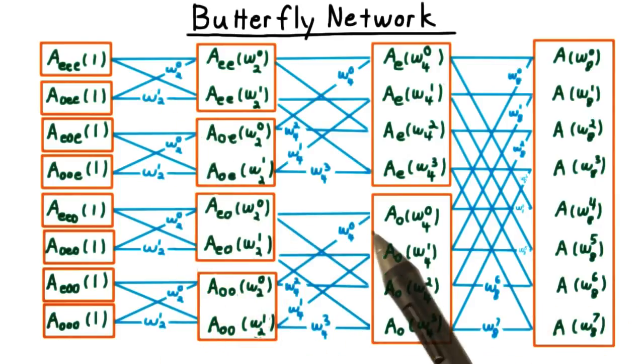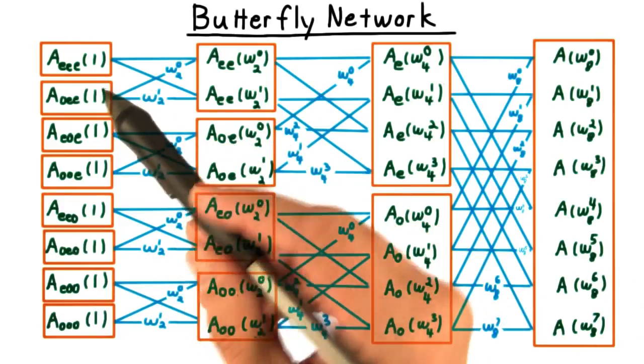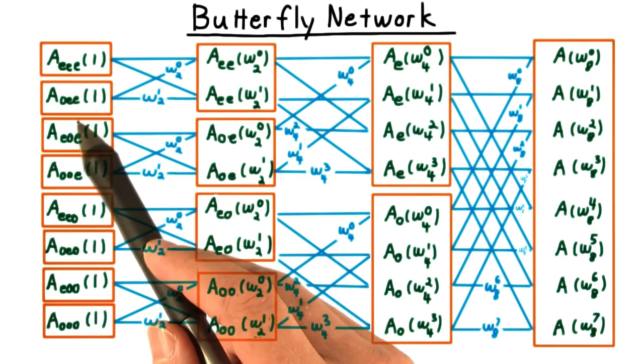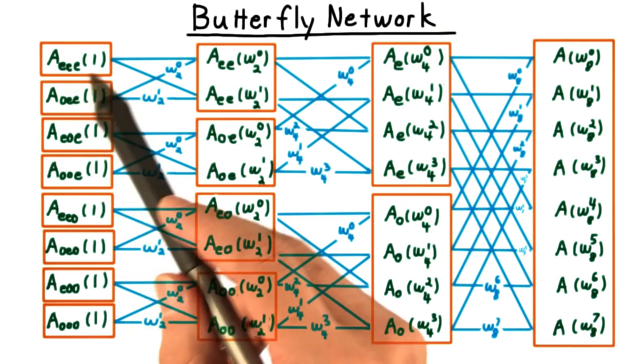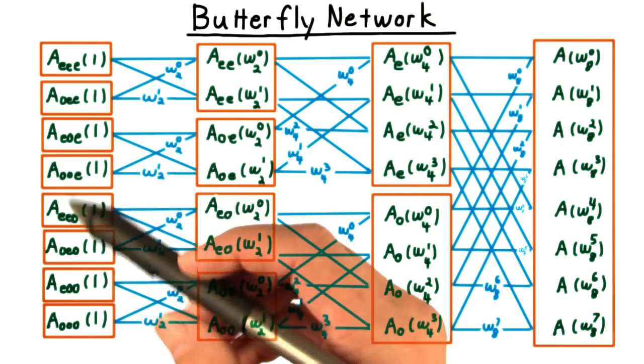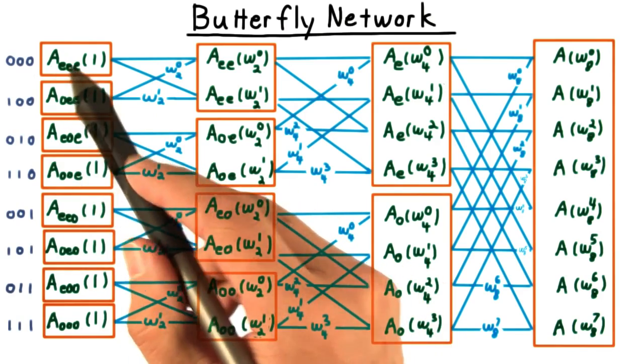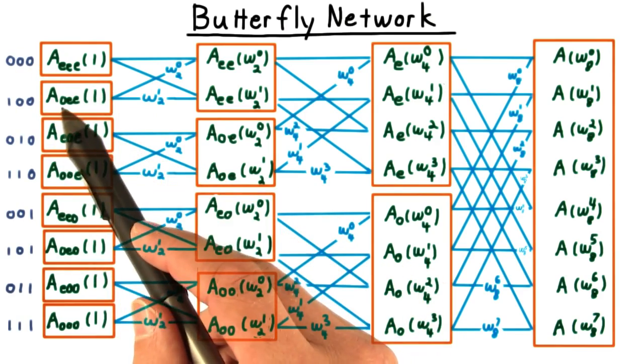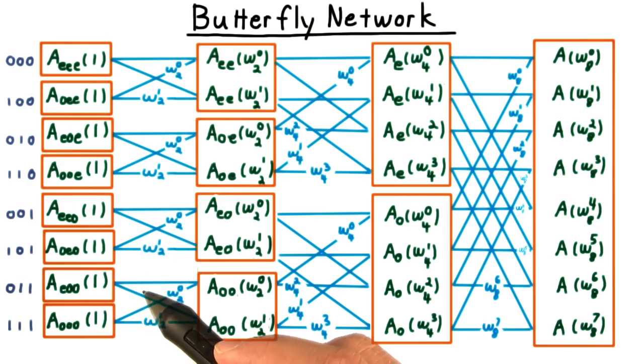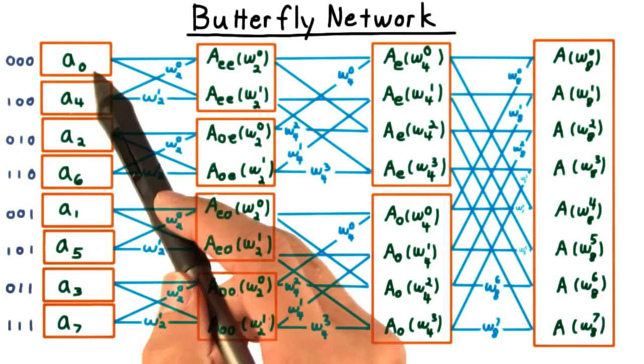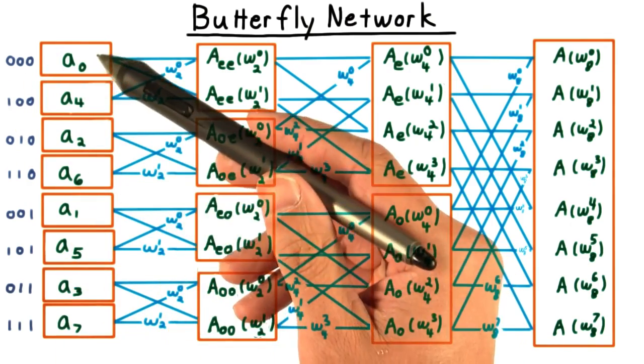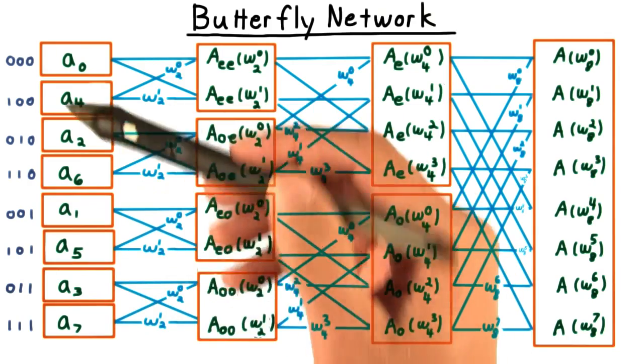Also note that there is a unique shortest path between all nodes on the right and those on the left. Another thing to note is that this sequence of evens and odds on the subscripts of these polynomials can be translated to binary, with e's being translated to 0's and o's being translated to 1's. And these numbers then tell us which coefficient of the original polynomial to return here.